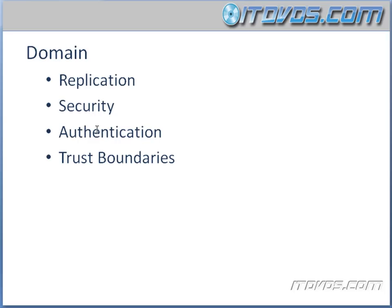The next reason is authentication. All of our users are going to authenticate to domain controllers in the same domain. We're going to create sites and site links that can help ensure that, say, a user in New York isn't authenticating to a domain controller in Phoenix. But when it comes to resource access, by default users in one domain cannot access resources in another domain unless they are explicitly given the appropriate permissions.